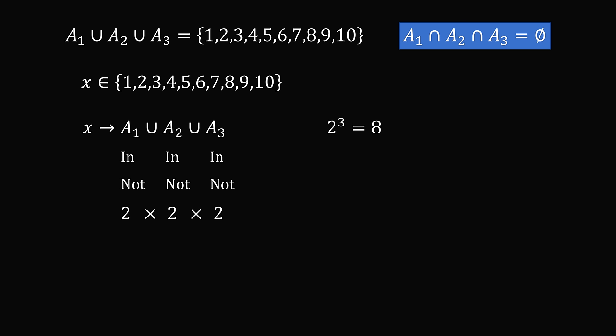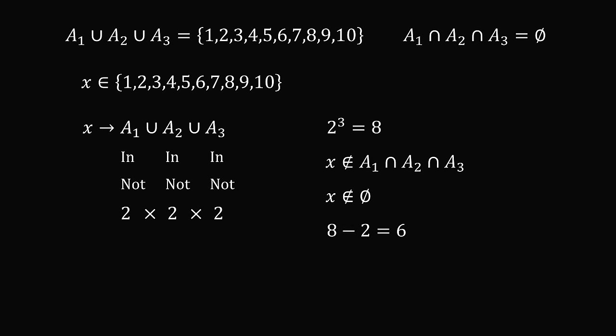But we need to remove some of the possibilities. We know we can't have x in all three sets because the intersection needs to be the empty set. So we subtract out one possibility. We also subtract out the possibility that x is not in A1, A2, or A3 because we need it to be in one of the three sets so that their union is all of the numbers going from 1 to 10. So we subtract two possibilities from 8 and that gives us six possibilities.